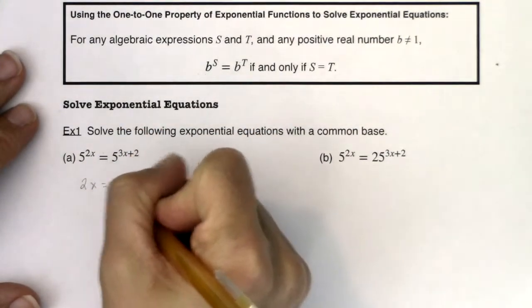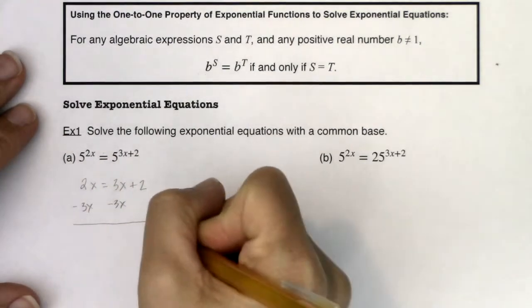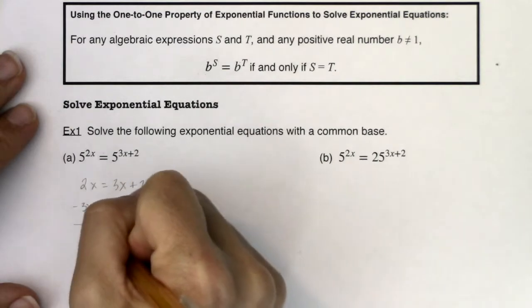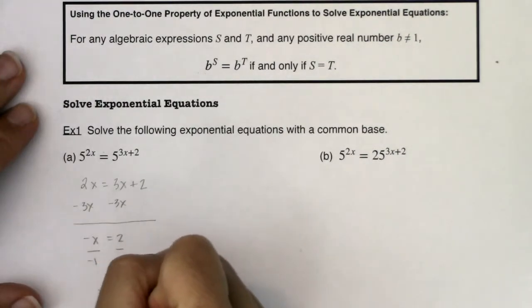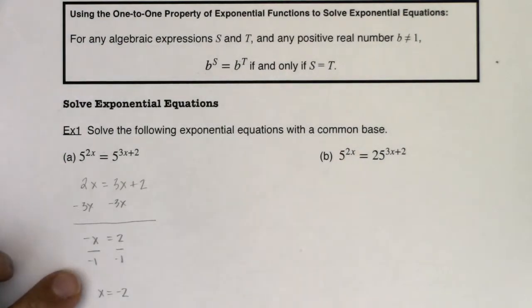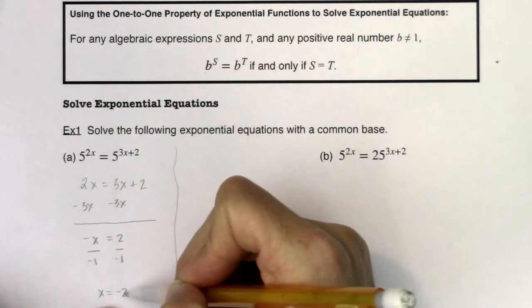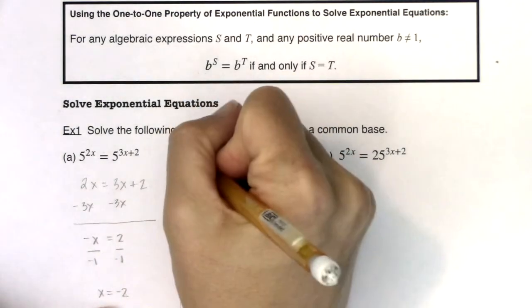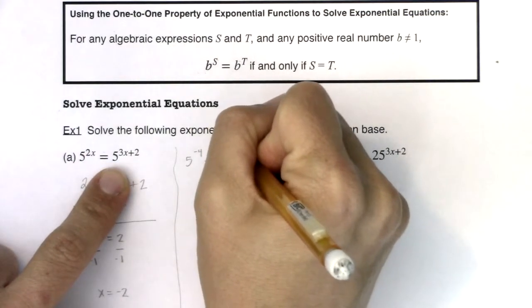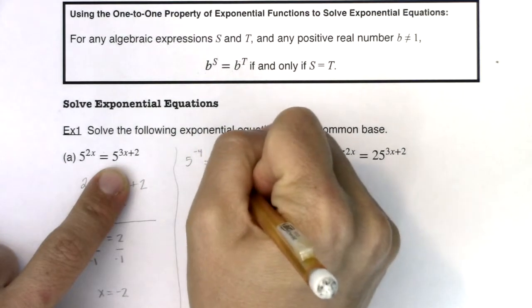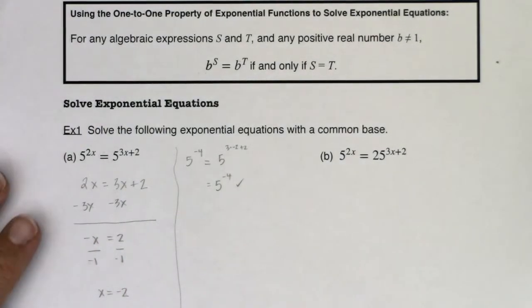Now it's just a linear equation. I'll subtract the 2x, giving negative x equals 2, then divide both sides by negative 1, and ultimately get x equals negative 2. Let's check: plugging in x = −2, the left side becomes 5 to the negative 4. The right side is 5 to the quantity 3 times negative 2 plus 2, which is also 5 to the negative 4. So this checks out — we got the correct solution.